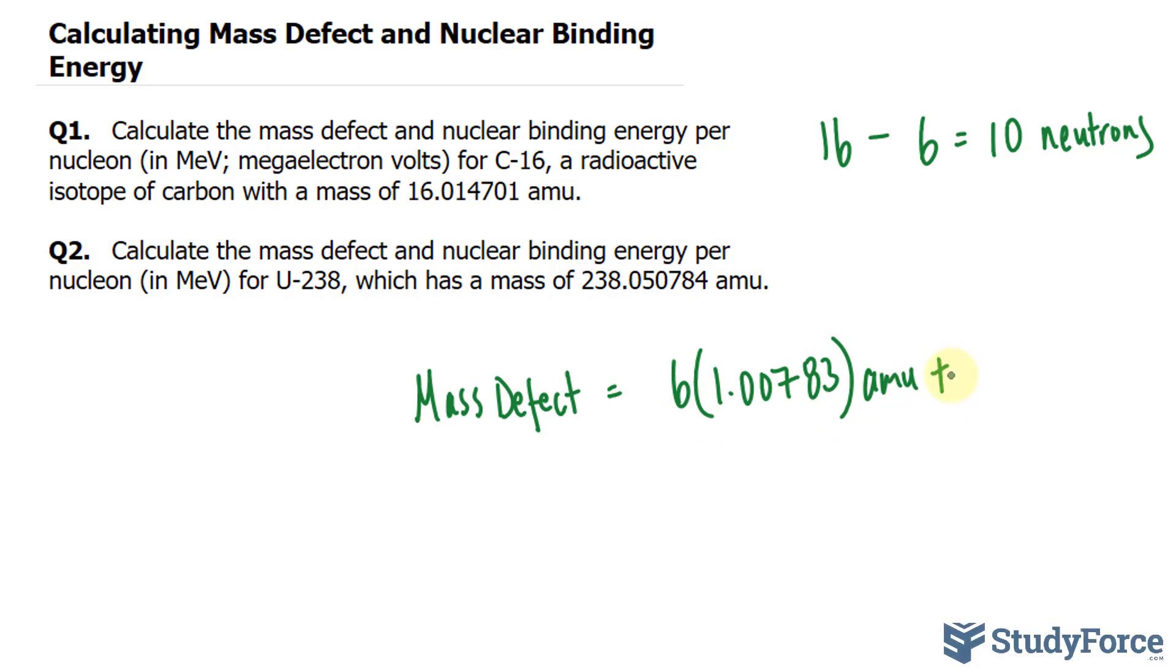We'll add this to the mass of all the neutrons. We said that there are 10 neutrons, and we'll multiply that by its mass. The mass of one neutron equals 1.00866. And once again, that's in AMU, minus the mass given here for the isotope of carbon, which is 16.014701.